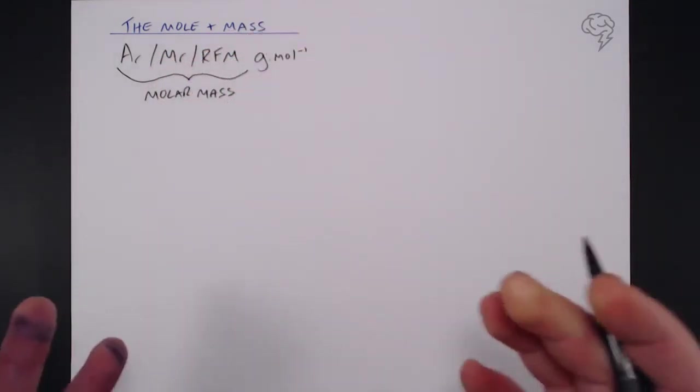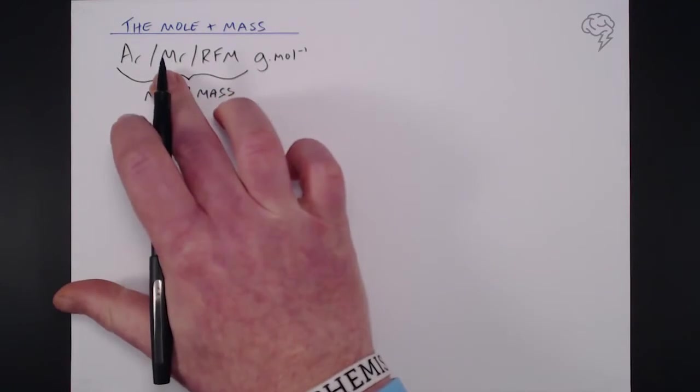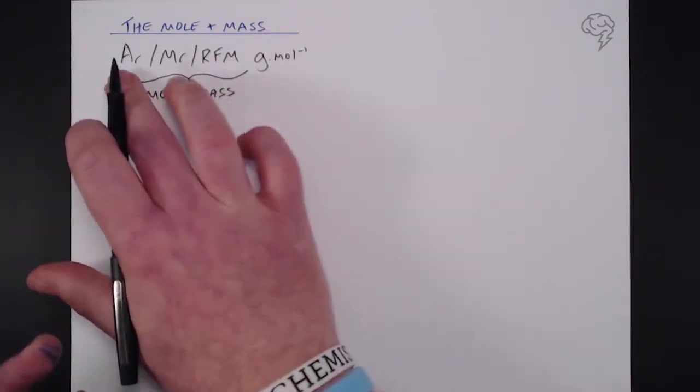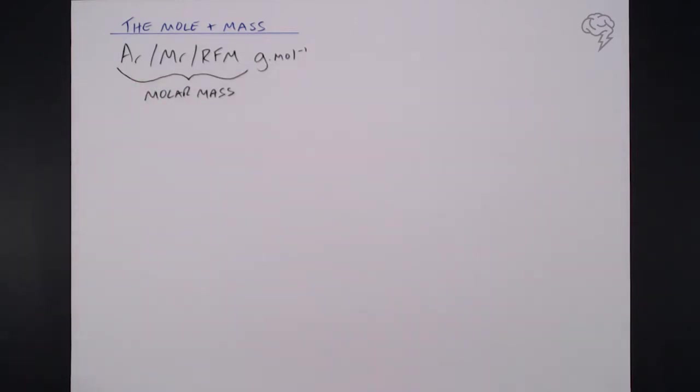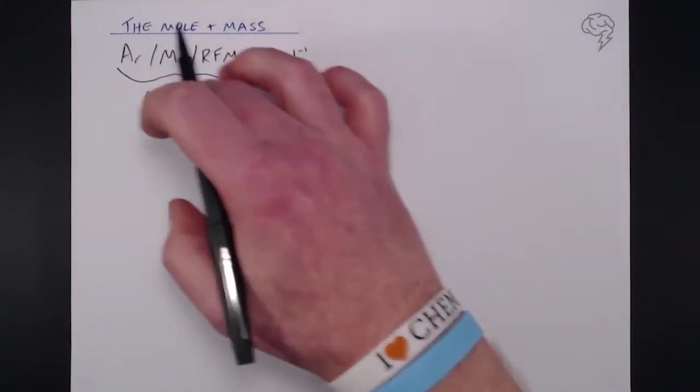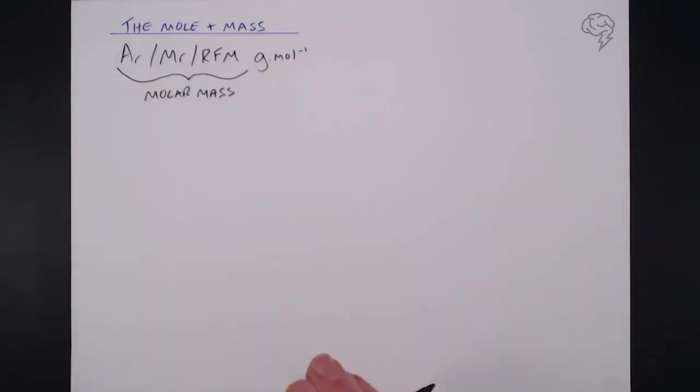So if we're talking about a compound we'll use MR, if we're talking about a salt we'll use relative formula mass, and if it's a single element we're going to be using relative atomic mass, but all of these we can refer to as molar mass as a generic term.